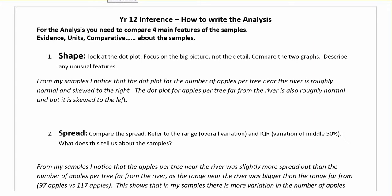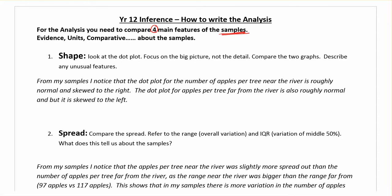Our next section is talking about the analysis, and here we've got four main things to cover. First, reminding ourselves that they have to be about the samples. If you're even thinking about mentioning a population in the analysis, slap yourself on the wrist and don't do it. This is about samples only. Things you want to make sure you put in here are your evidence, your units, and make sure it's comparative — those are the ER words: bigger, smaller, sadder, happier, things like that. Make sure again that it's about your samples.